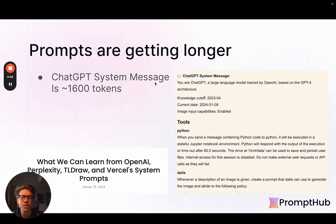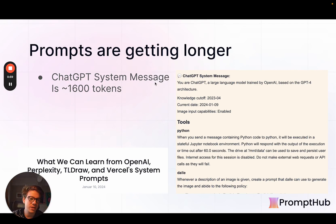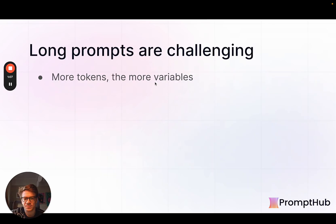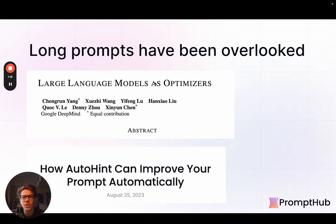For example, the ChatGPT system message is about 1,600 tokens. We did a deep dive on ChatGPT's system message as well as a couple of other leading tech companies like Perplexity, tldraw, and Vercel — that's on our blog too. The point here is that these prompts are getting a lot longer, and long prompts are more challenging to handle, iterate on, and improve. The more tokens there are, the more variables there are, and it's harder to control for all of them.